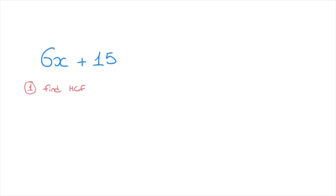Perhaps you're able to state what the highest common factor of 6x and 15 is. If not, you can always use the following method. We start by writing all of the terms as products of their factors. So 6x as a product of its factors would be 2 times 3 times x, plus 15, and 15 written as a product of its factors would be 3 times 5.